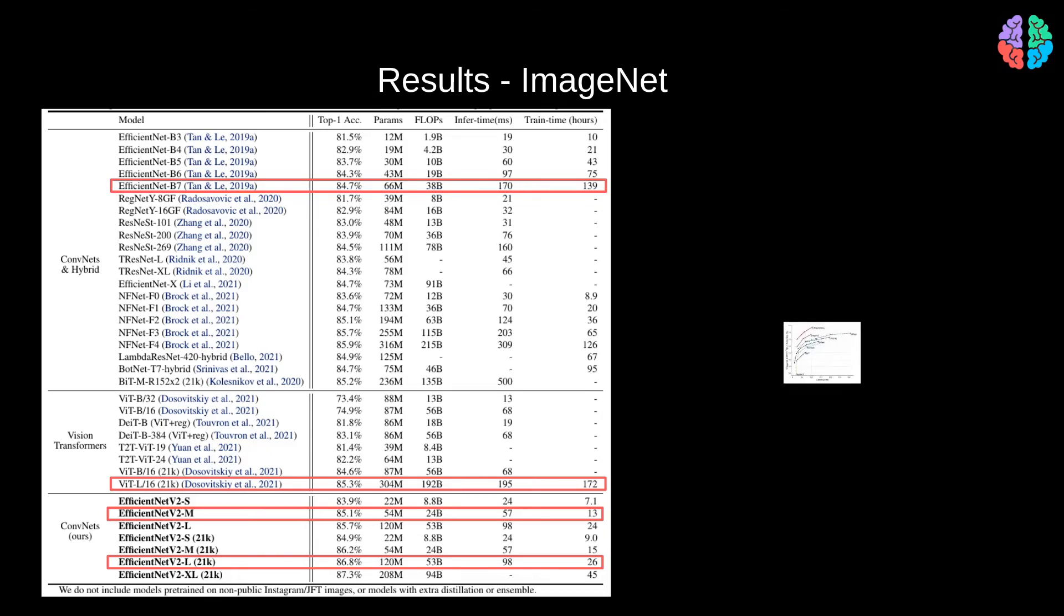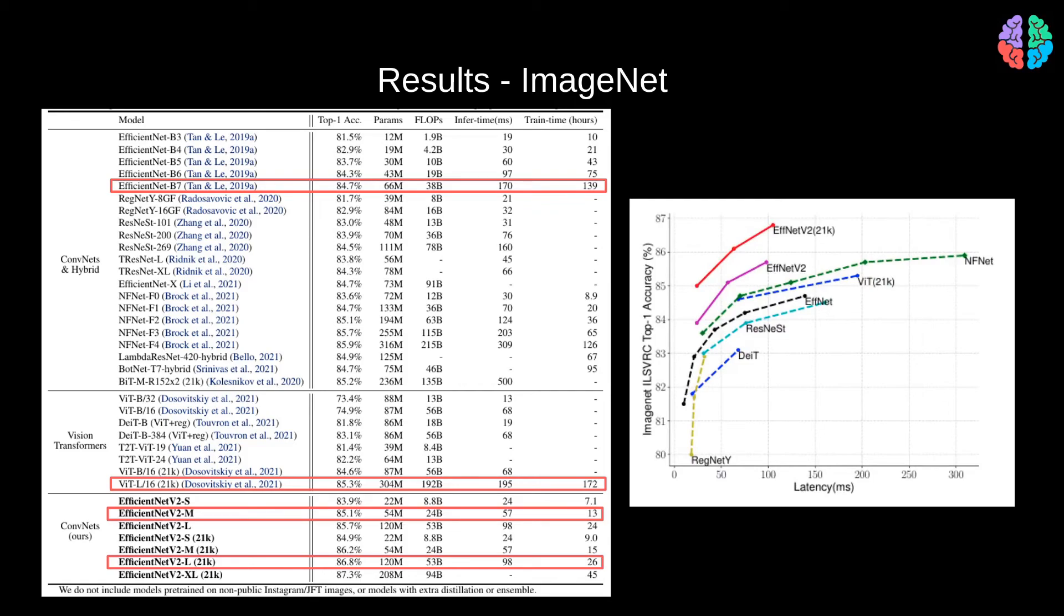In a separate graph, they also show that the training time gains come with better inference times too, with the EfficientNet v2 having much lesser latency compared to state-of-the-art models.